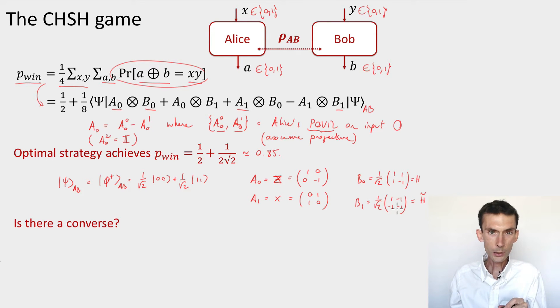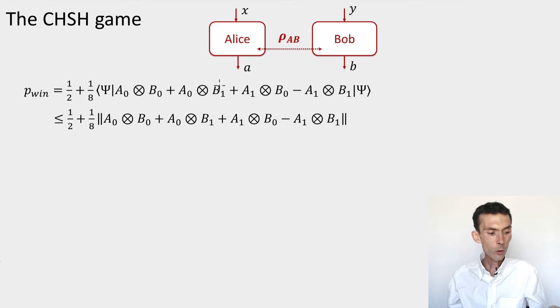So this is an optimal strategy for the CHSH game. And the question that I'm asking in this video is, is there a converse? Can we say something about strategies that achieve the optimum in terms of their structure? Is this the only optimal strategy or maybe there exists some others? Is it necessary that the state that is shared is an EPR pair? So the answer is no, and let's try to see why.